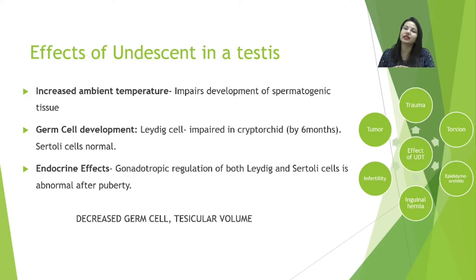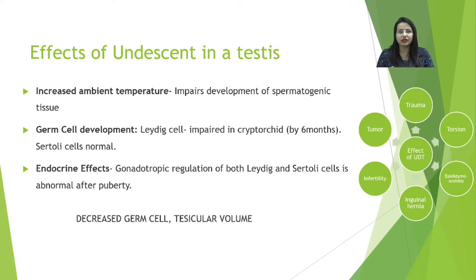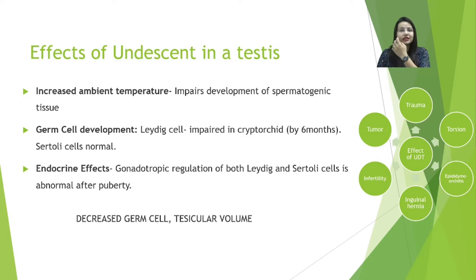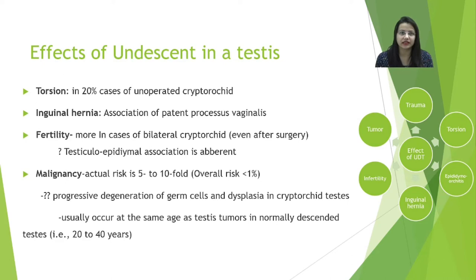Reports state that by two years of age, 40% of patients with undescended testis would have completely lost their germ cells — this refers specifically to germ cell loss, not endocrine function. For endocrine effects, there may be normal testosterone production, but in certain patients there may be dysregulation of gonadotropin hormones, usually appreciated after puberty. There will be decreased germ cells and decreased testicular volume, leading to infertility issues, especially in patients with bilateral undescended testis.